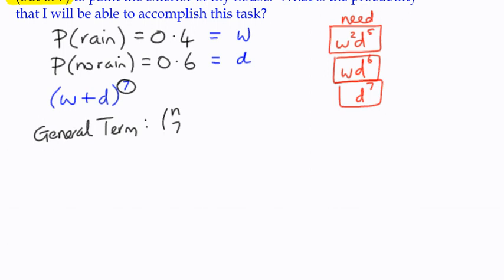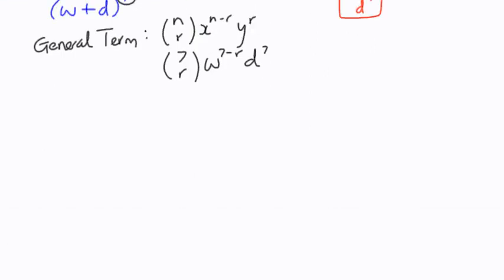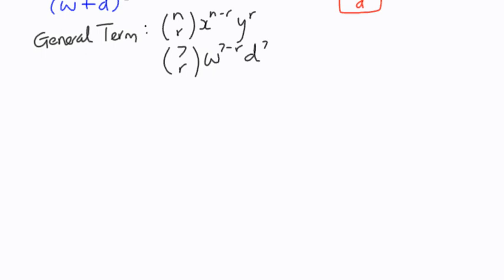I'll write out the general term. First of all, it's N choose R, X to the power of N minus R and Y to the power of R. So in this particular story, N is 7 and we've got W to the power of 7 minus R and we've got D to the power of R. You see why it's probably good not to use N or R as my probability letters. It's just going to get a bit muddled up.